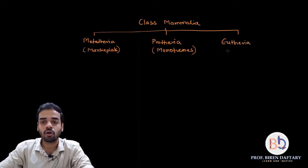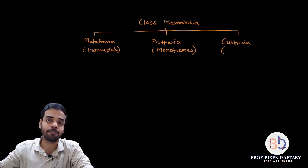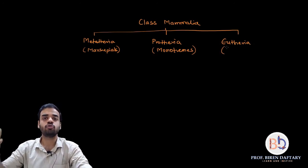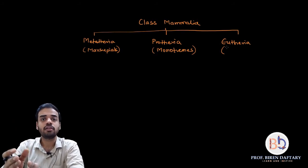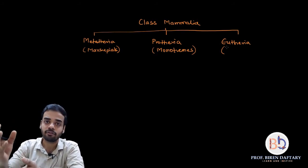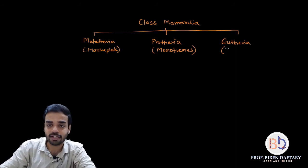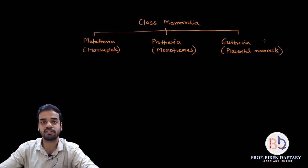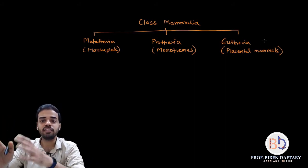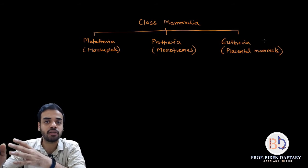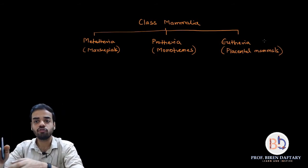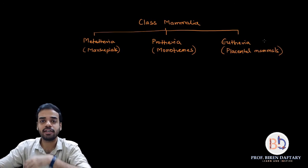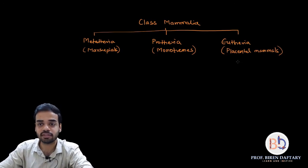The third subclass under Mammalia is called Eutheria. Eutheria are all mammals which have a placenta, meaning the mother and fetus are connected via a placenta — so we can call them placental mammals. For human, monkey, and ape evolution, we are concerned with Eutheria.